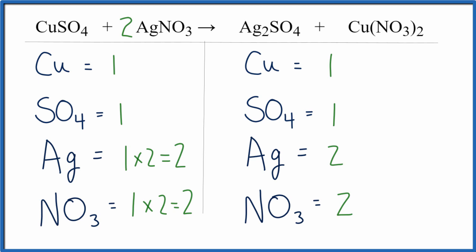And once I've done that, I can see that everything's the same on each side of the equation. And we're done. We've balanced this equation. The key here, if you have an SO4 group, a polyatomic ion like this, on both sides, you could just count it as one thing.